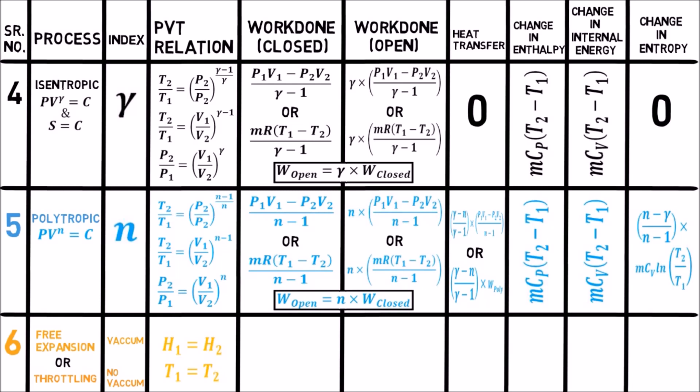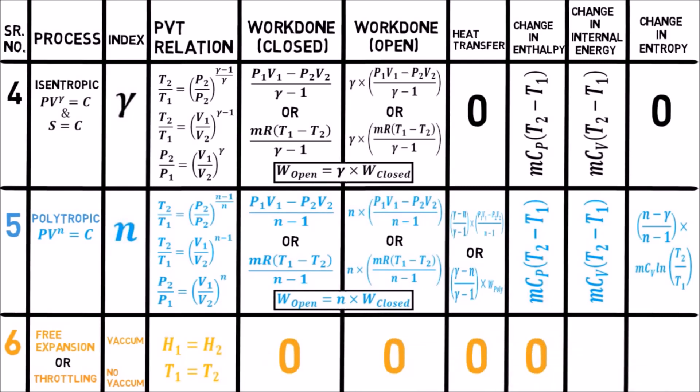For real gases, the temperature may increase or decrease as per their Joule-Thomson coefficient value. Because of the same temperature, don't think that free expansion is an isothermal process. In isothermal process, temperature remains constant throughout the process, while here only the initial and final temperatures are the same — temperature changes in between, so be careful. Remaining parameters like work done, heat transfer, change in enthalpy, and change in internal energy are zero for both processes, but change in entropy is not zero, which is the same as in isothermal process.